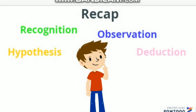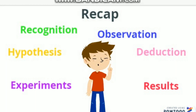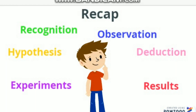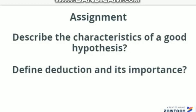Let's have a recap. We studied how Tim solved a biological problem using all the steps of biological method. We then studied hypothesis, which is a tentative statement, and deduction, which is a logical consequence of the hypothesis. For your assignment, answer these two questions: describe the characteristics of a good hypothesis, and define deduction and its importance. The answers can be found in this video, so watch it carefully.